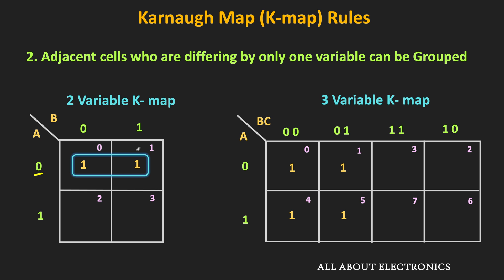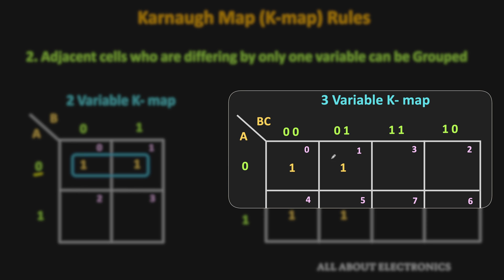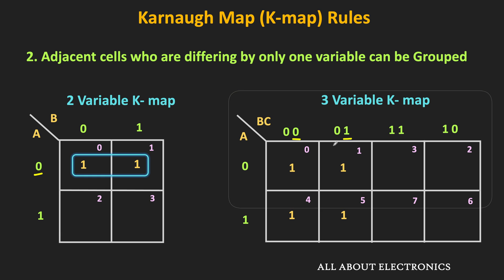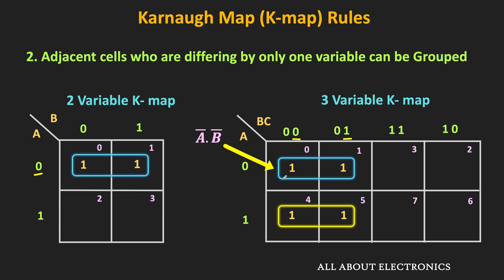Similarly, in the three-variable K map, if you see minterm M0 and M1, only variable C is changing, and the other two variables A and B are not changing. That means we can combine these two minterms, and this group corresponds to A-bar dot B-bar, because the value of variables A and B is equal to 0. Likewise, for minterms M4 and M5, since only variable C is changing, it is possible to combine these two minterms, and this group corresponds to A dot B-bar.